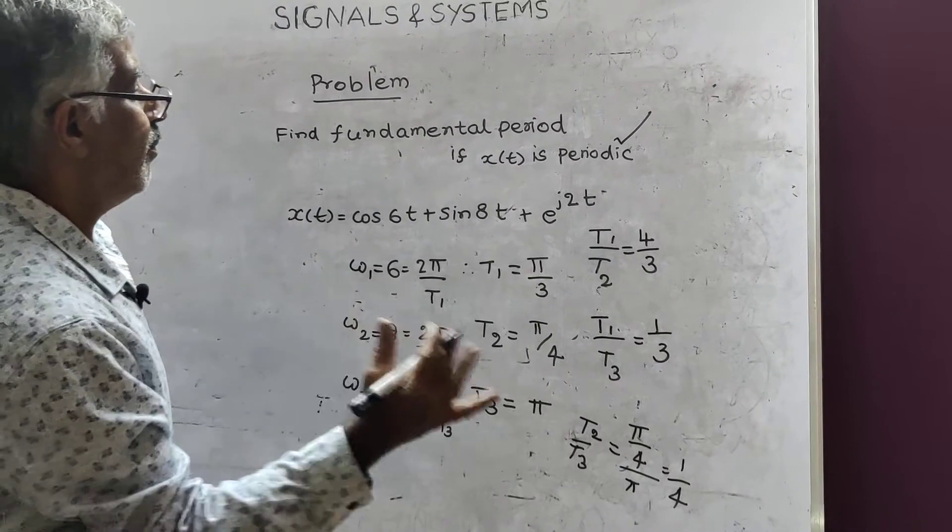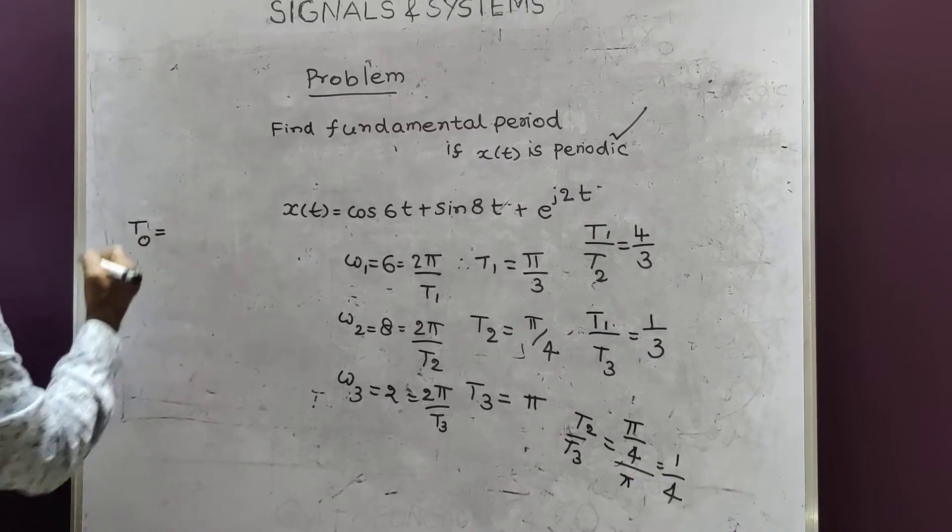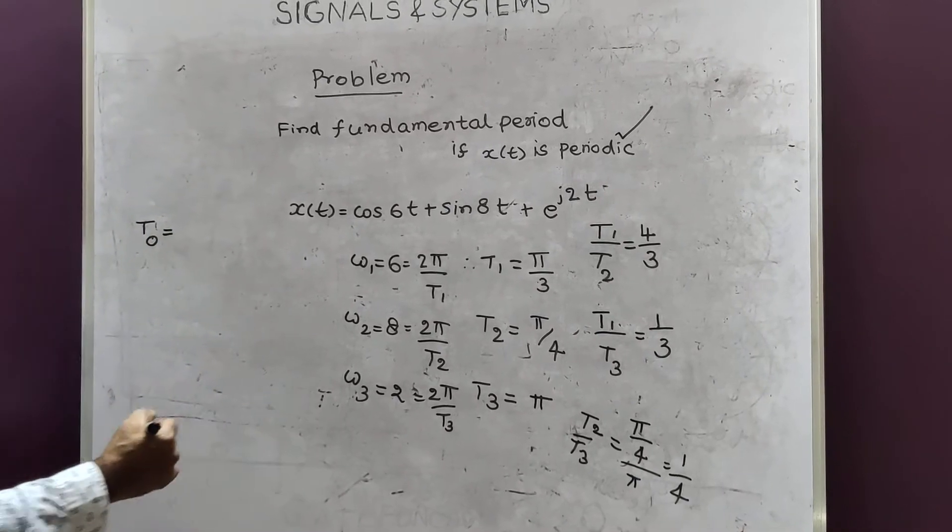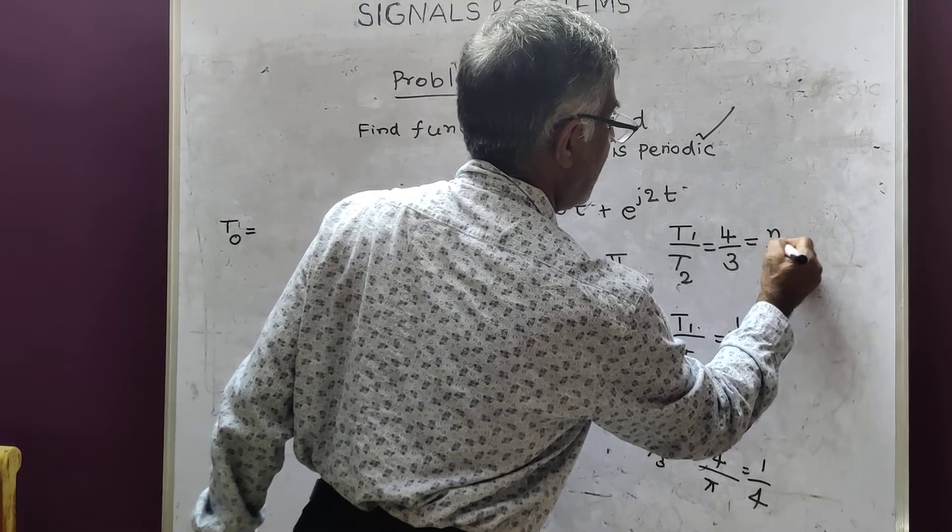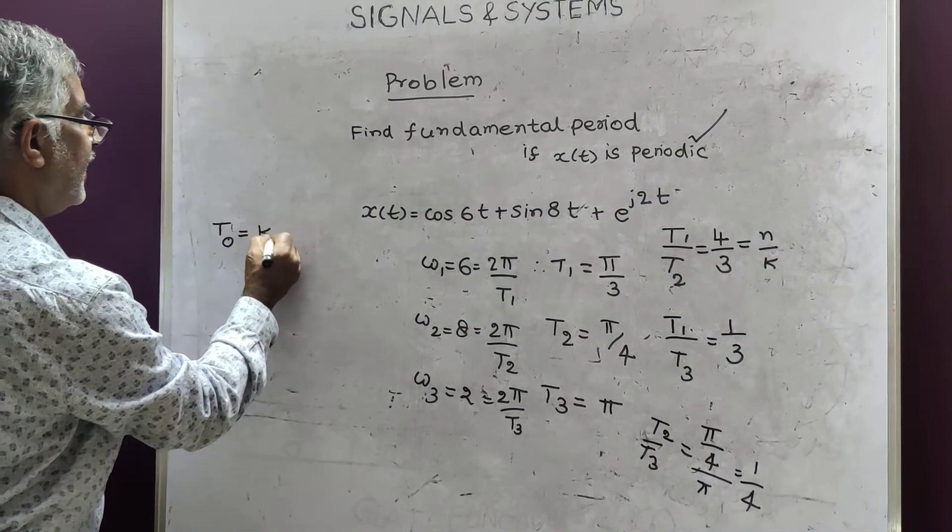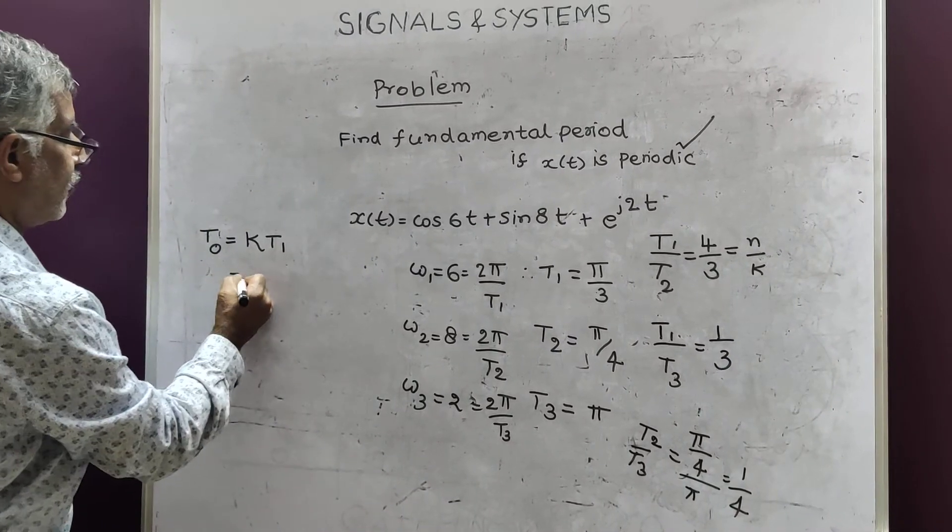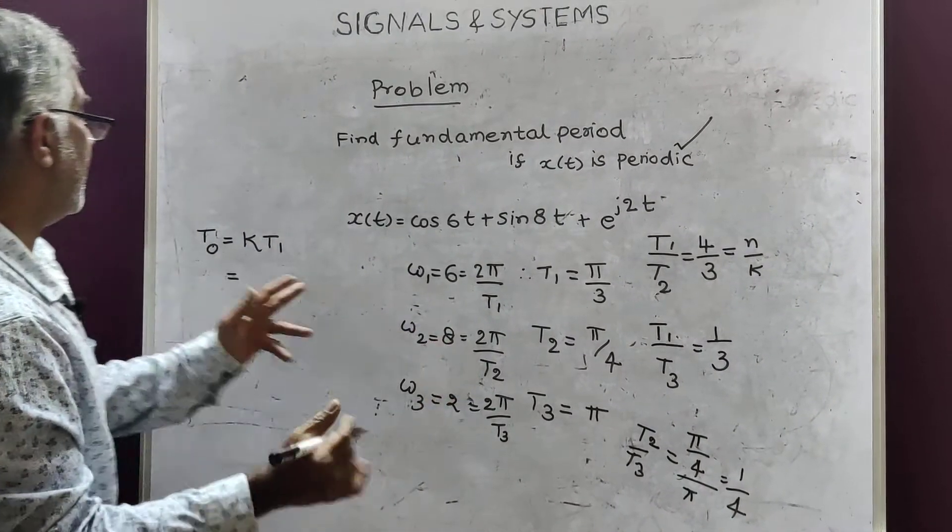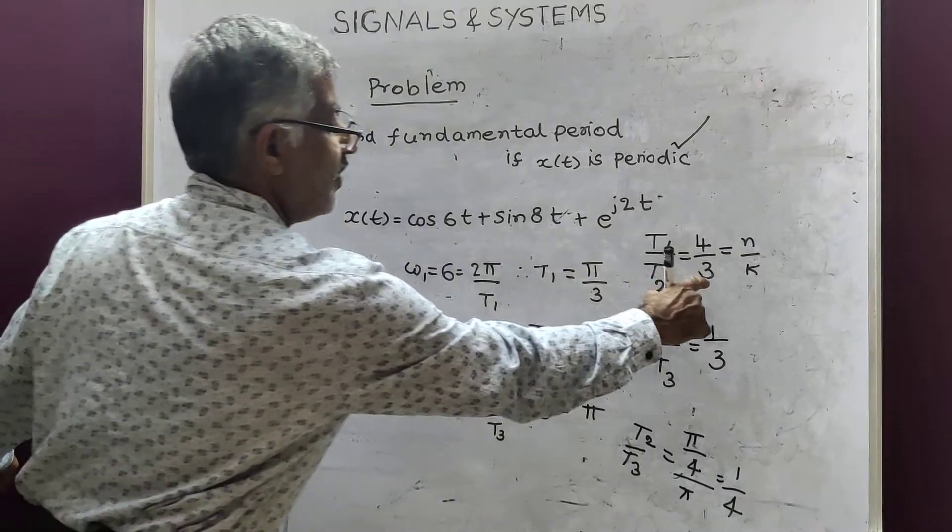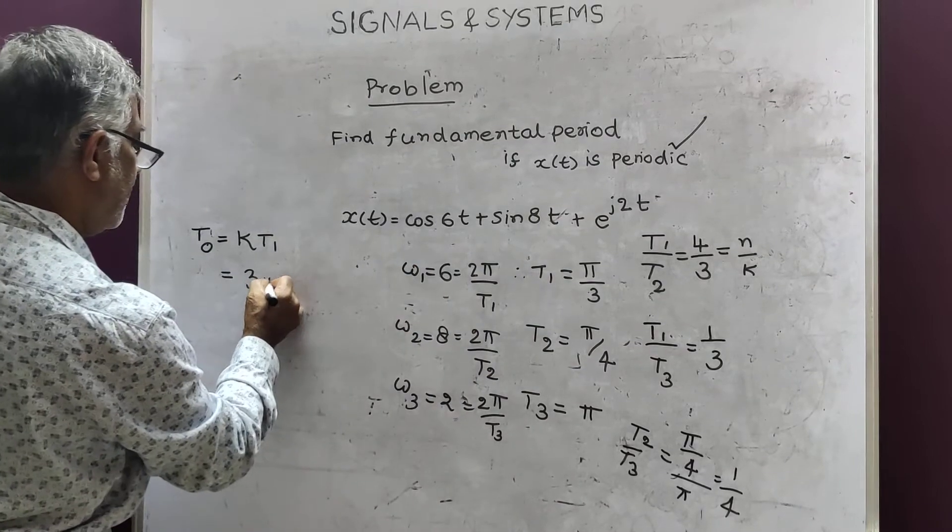After ensuring periodicity, then you find out fundamental period. t0 is equal to kt1, equal to or nt2, kt1. So k here is 3. t1 here is π by 3.